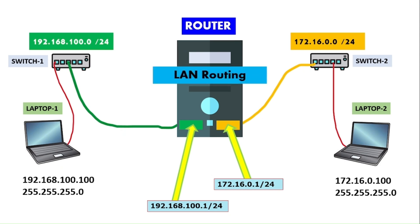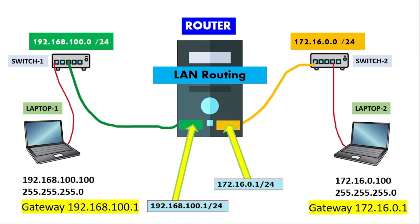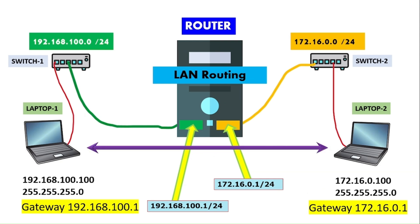Even with the NICs in place, the two laptops still won't be able to talk with each other — we need to configure LAN routing on this Windows Server. We will also ensure gateways are set: Laptop One's gateway will be 192.168.100.1 and Laptop Two's gateway will be 172.16.0.1. All traffic from the 192.168.100.0 network routes through 0.1, and all traffic from 172.16.0.0 routes through 0.1. Then we'll test connectivity between the two laptops.